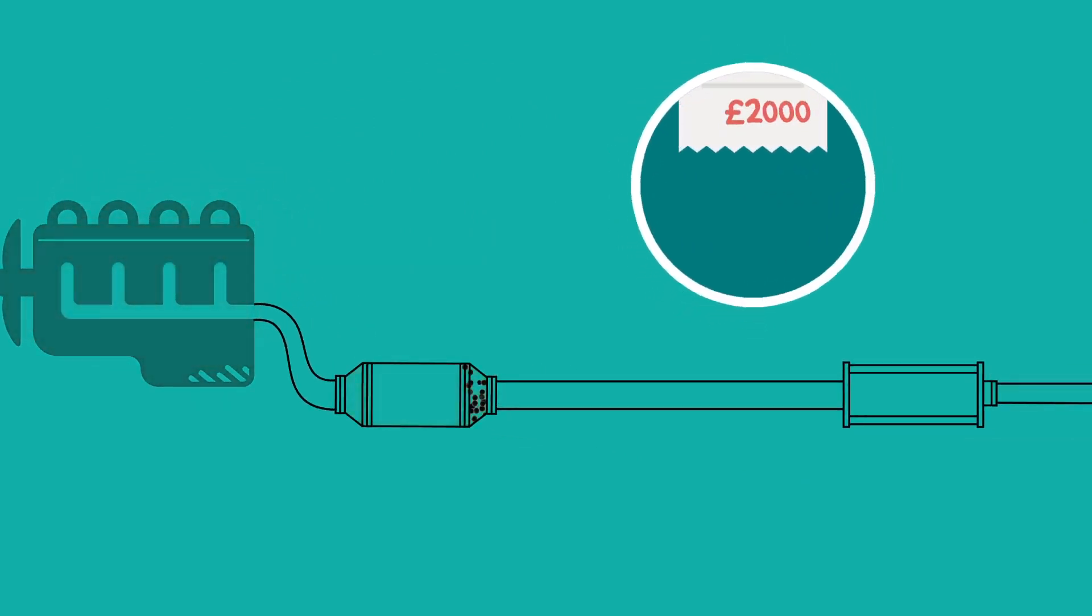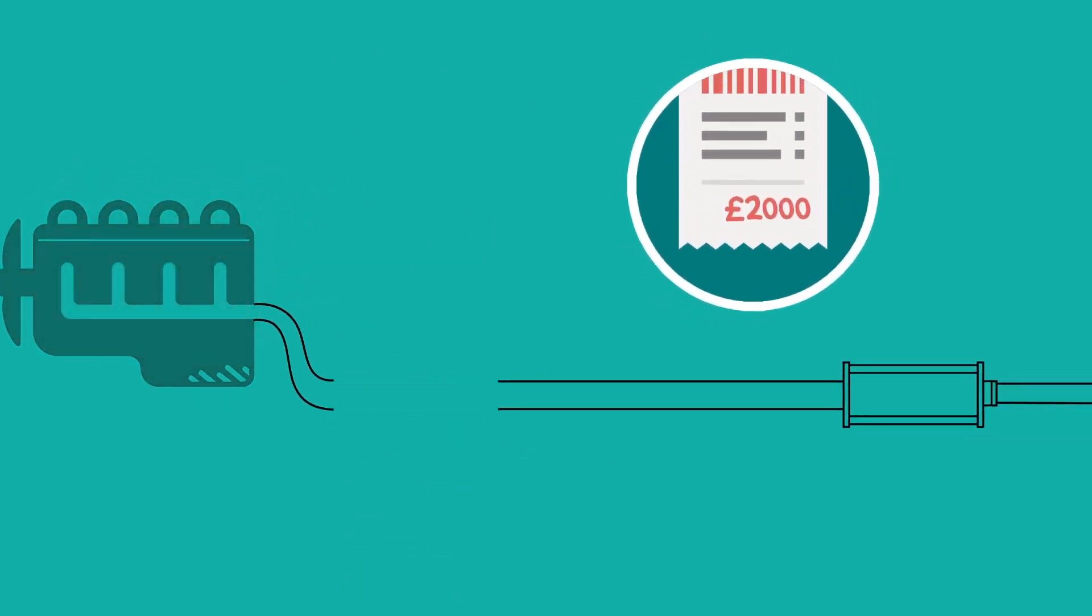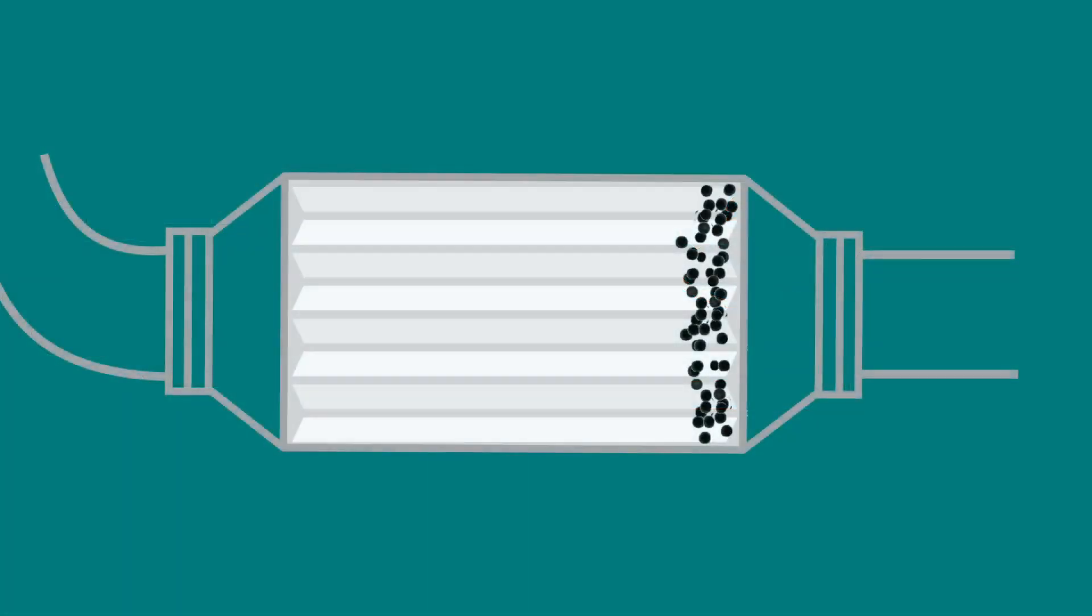Until now, this has meant a hefty bill of up to £2,000 for a replacement DPF system, or the use of a chemical cleaning solution that targets the soot deposits within the filter, which is, at best, a short-term temporary fix as the cleaning process is only half completed.